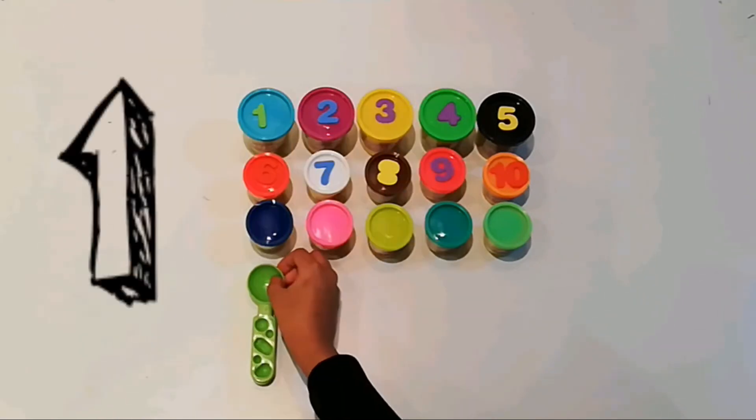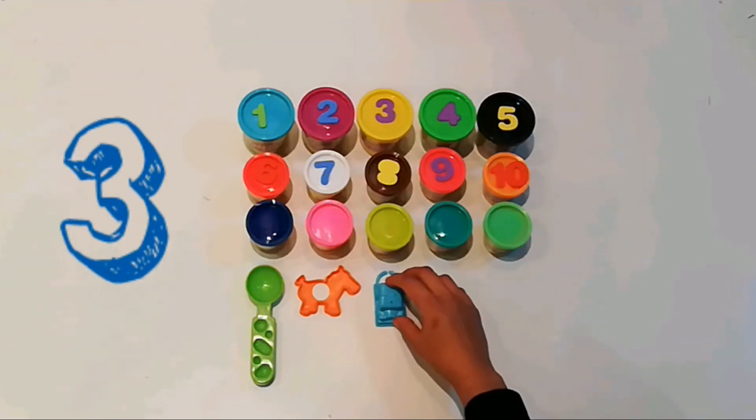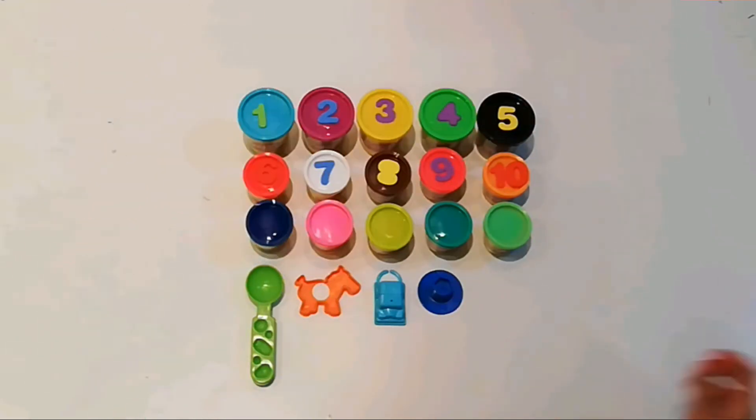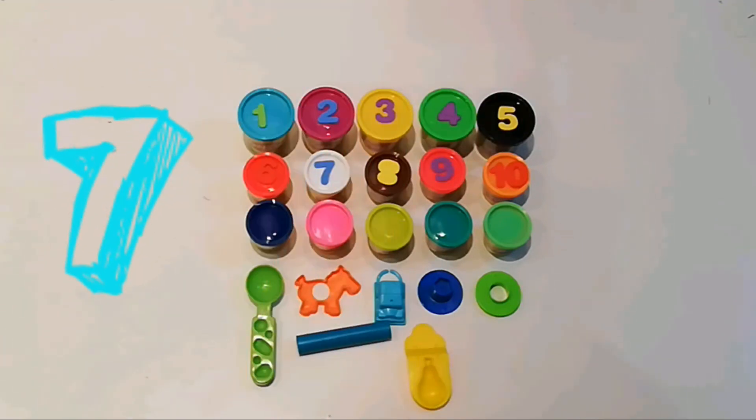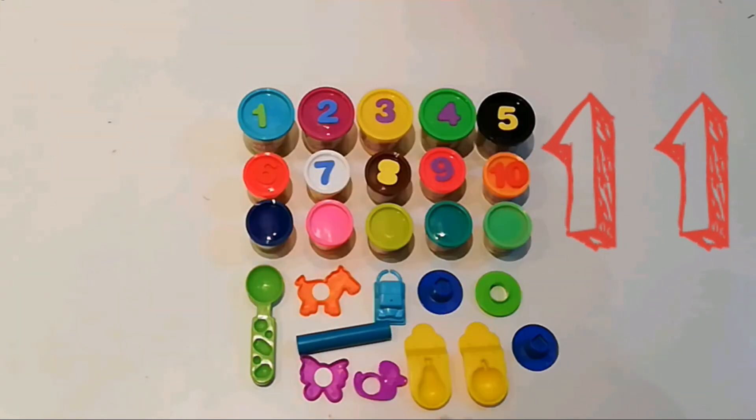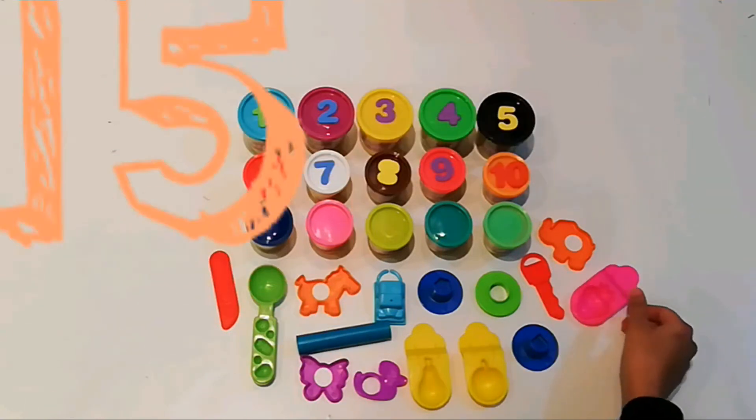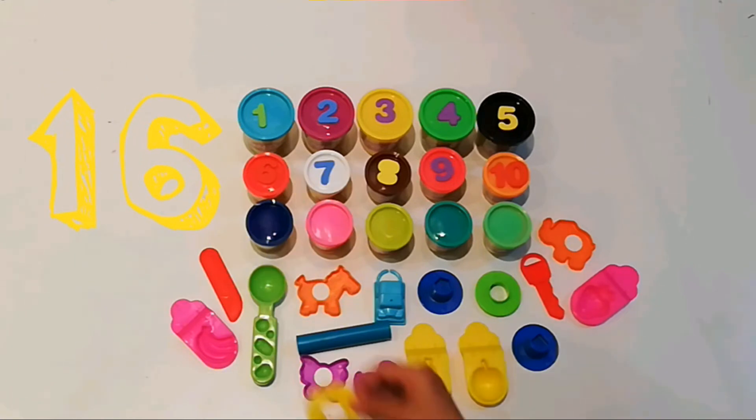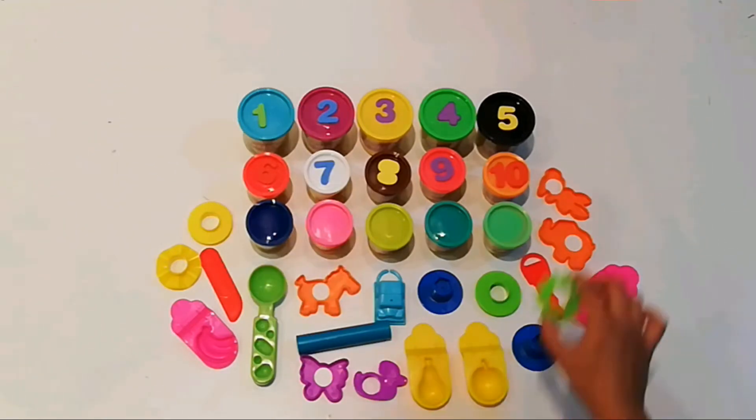How many can you see? I can see one, two, three, four, five, six, seven, eight, nine, ten, eleven, twelve, thirteen, fourteen, fifteen, sixteen, seventeen, eighteen, nineteen, twenty.